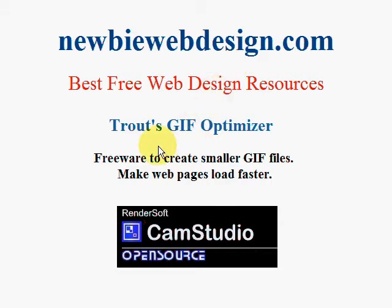Today I'm going to give you an overview of Trout's GIF Optimizer, a freeware program to create smaller GIF files and make web pages load faster. When you build a webpage, you want it to load as fast as possible for your visitors, so you need to make sure the file sizes of your JPEG images or GIF images are as small as possible. Trout's GIF Optimizer does just that for GIF images or graphics.